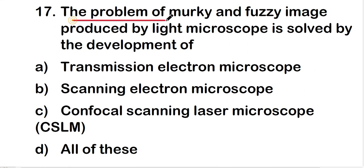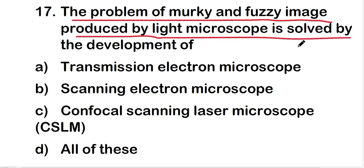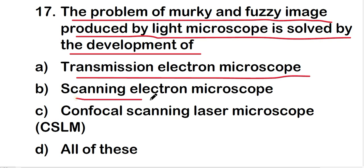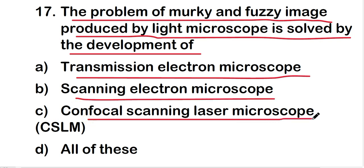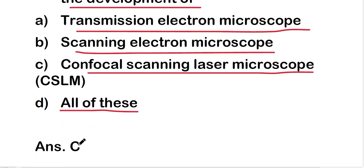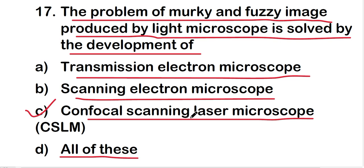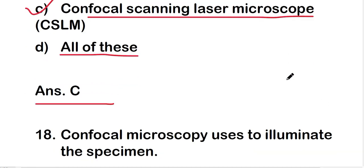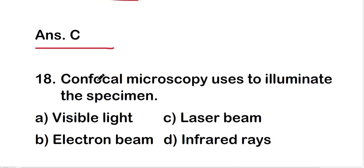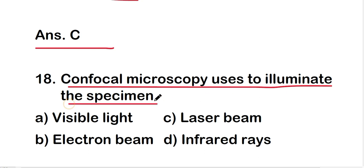The problem of murky and fuzzy images produced by the light microscope is solved by the development of: transmission electron microscope, scanning electron microscope, confocal scanning laser microscope, or all of these? The right answer is option C — confocal scanning laser microscope solves the problem of murky and fuzzy images produced by the light microscope.